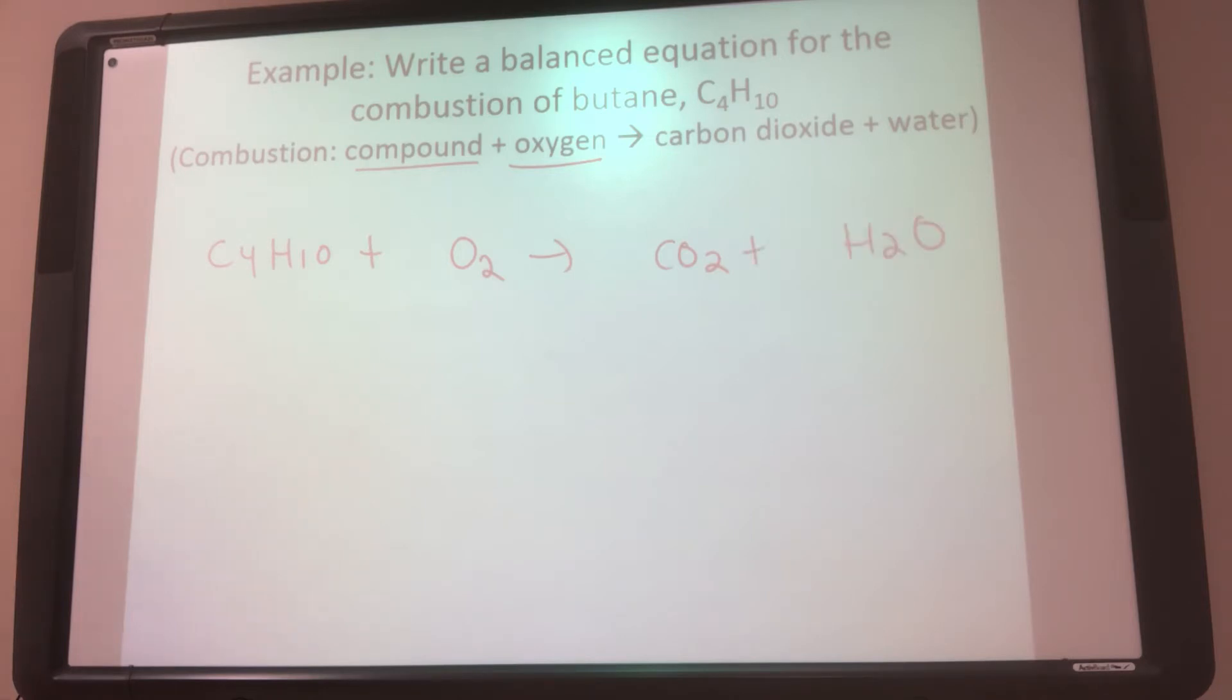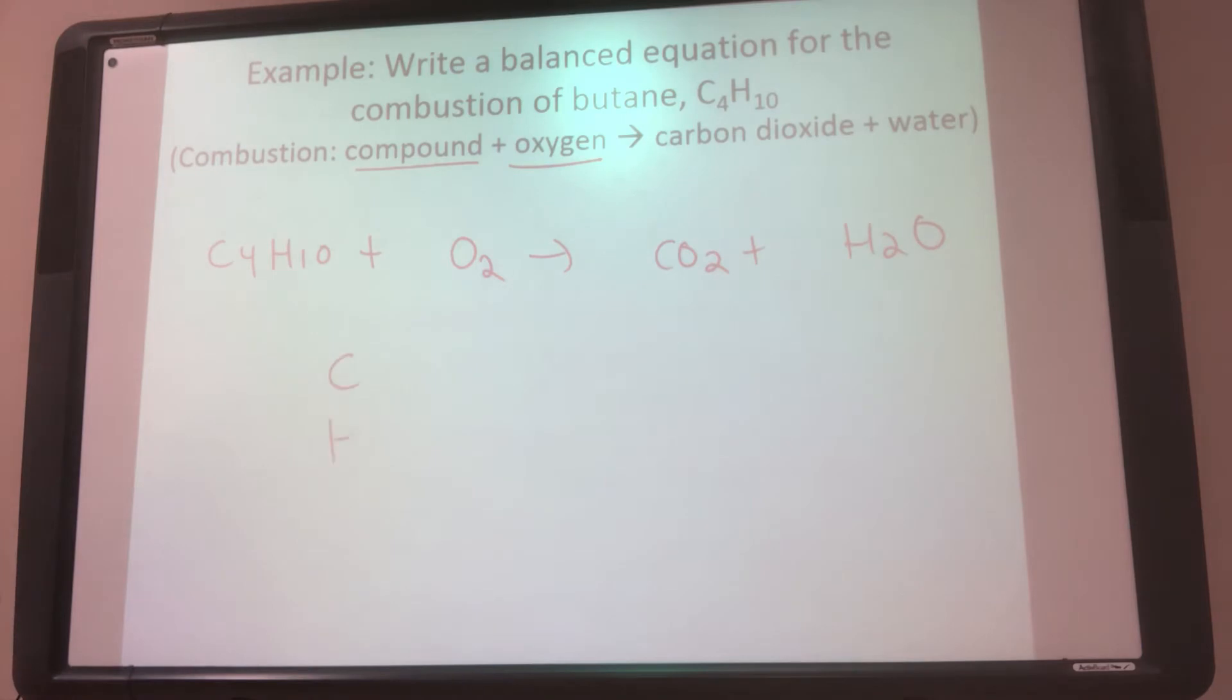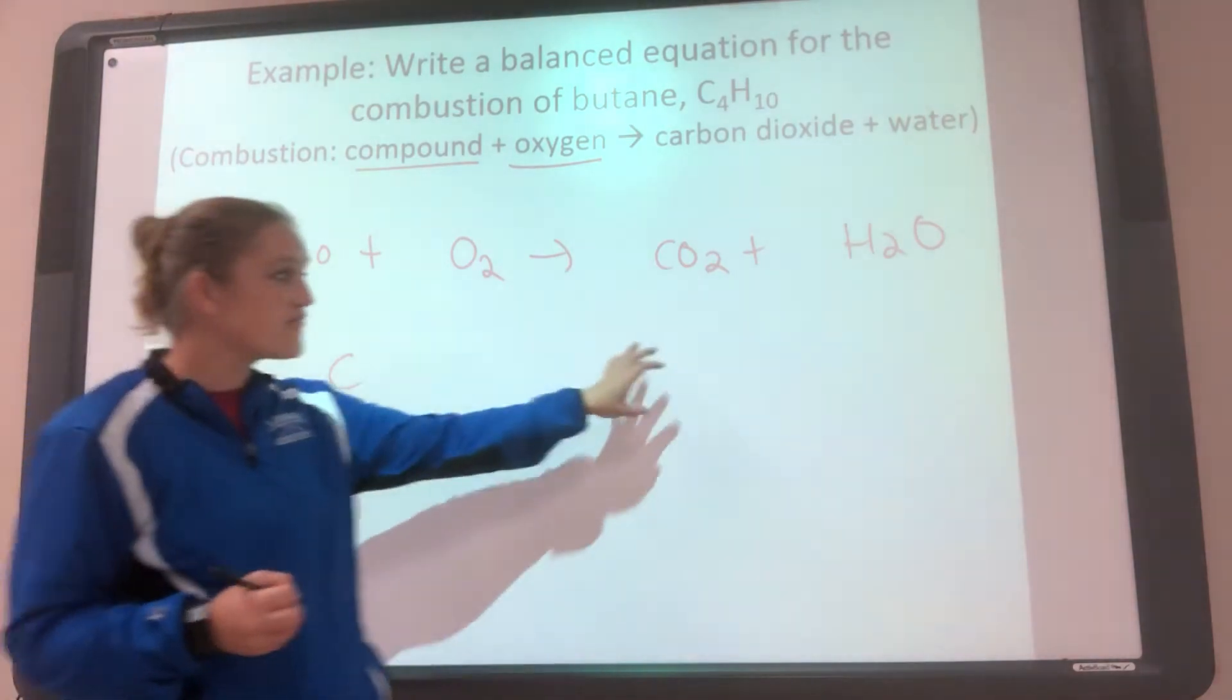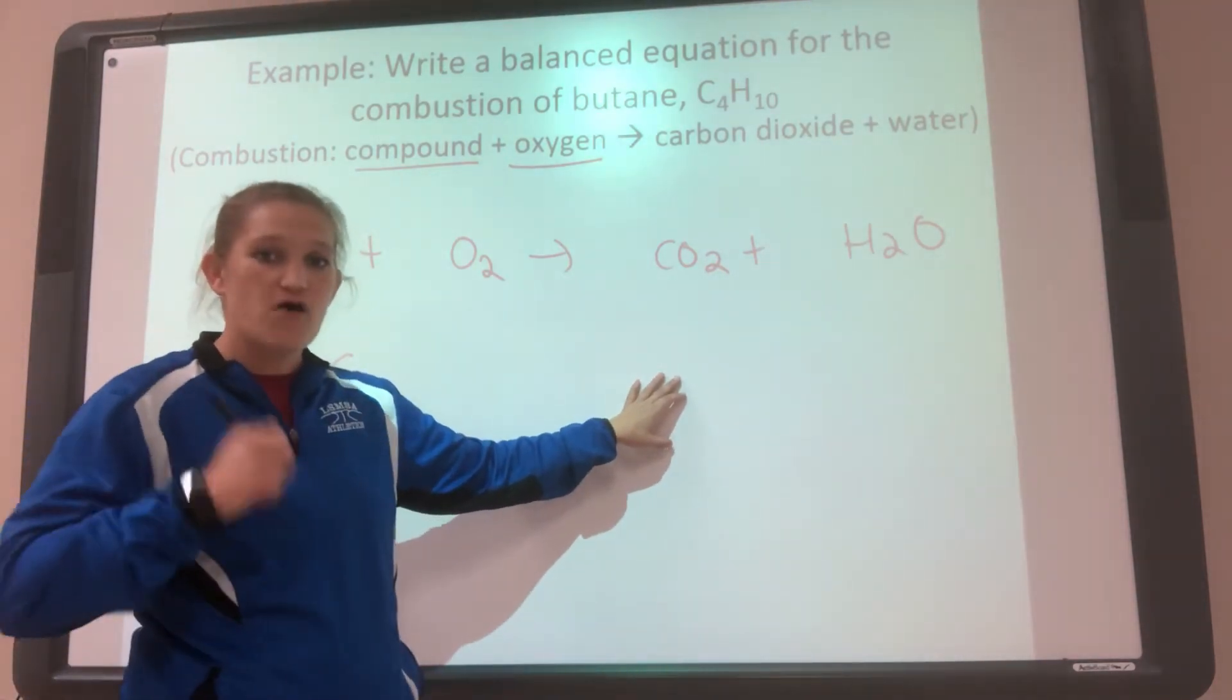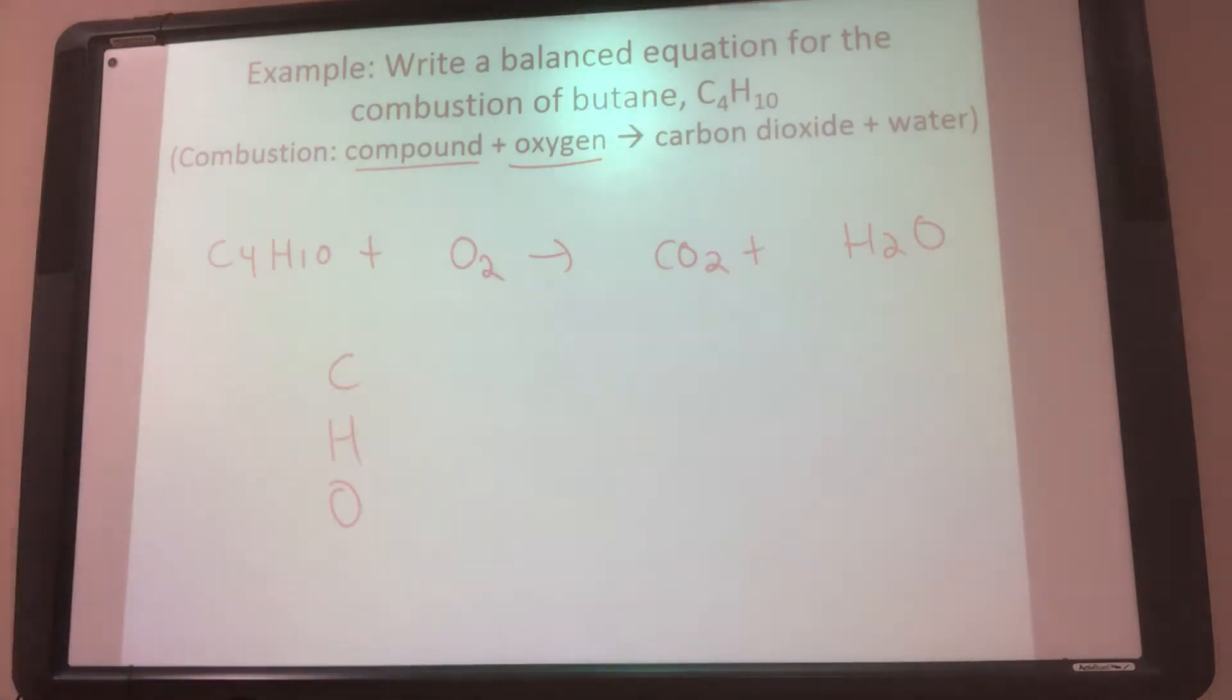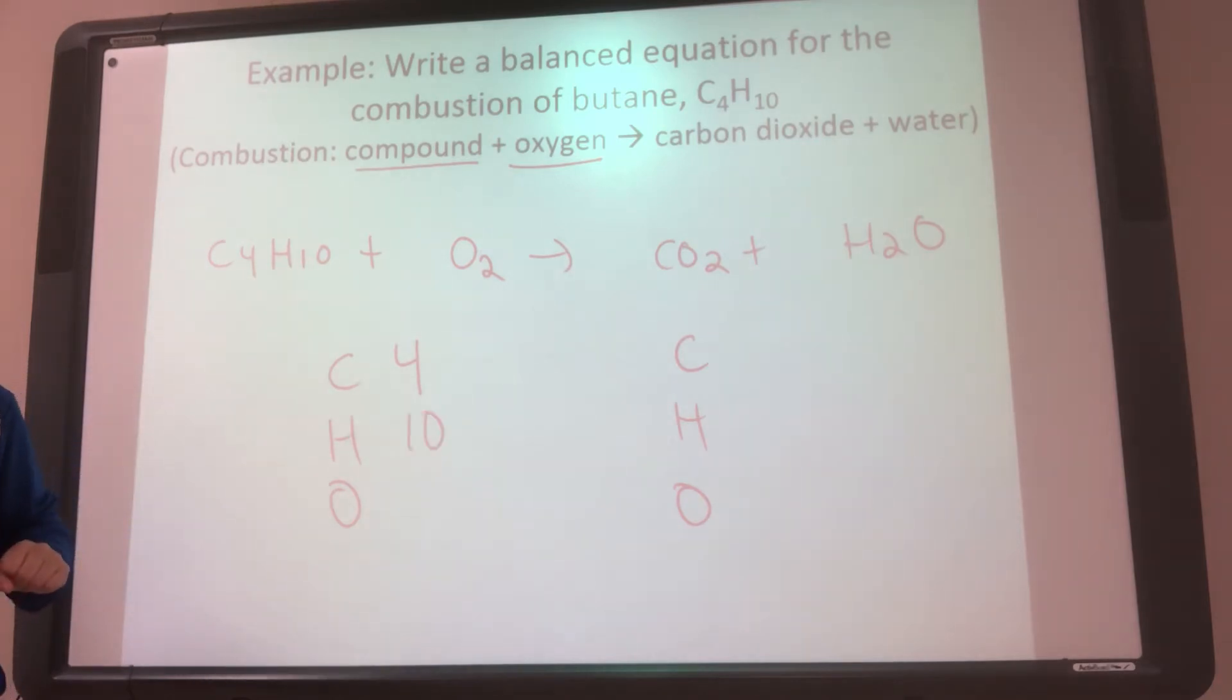All right. So first, let's figure out how much we have. So what elements do I have on the left? I have carbon, hydrogen, and oxygen. So I do a little bookkeeping. I have carbon, hydrogen, and oxygen. Whatever elements you have here, you have to have the same ones here. That's the law of conservation of mass. All right. How many carbons on this side? I have four carbons. I have 10 hydrogens. And I have two oxygens.